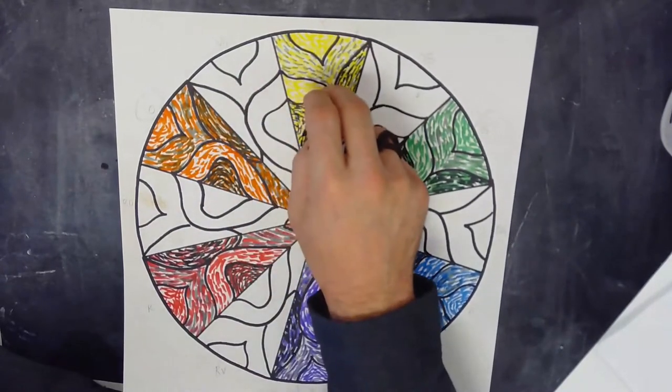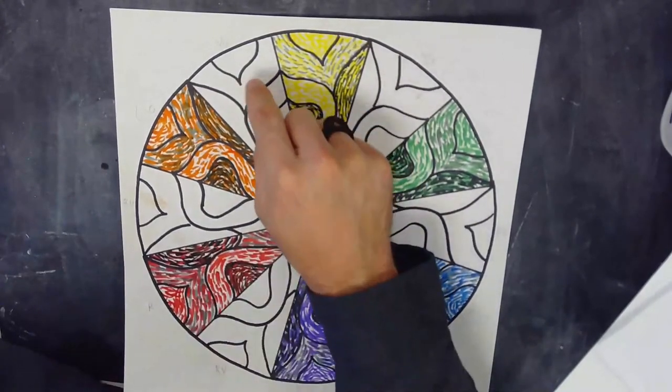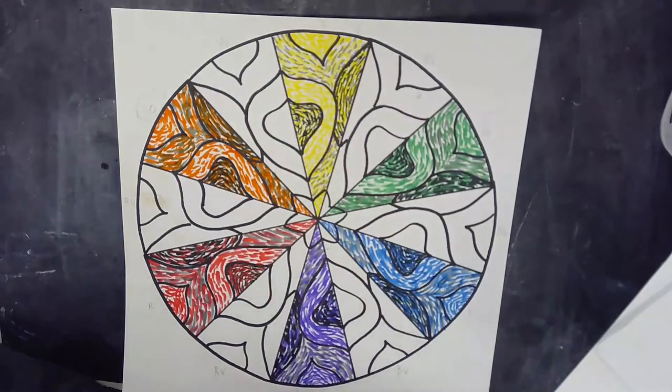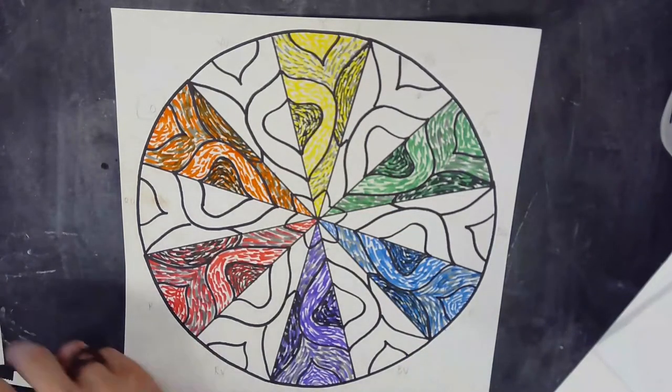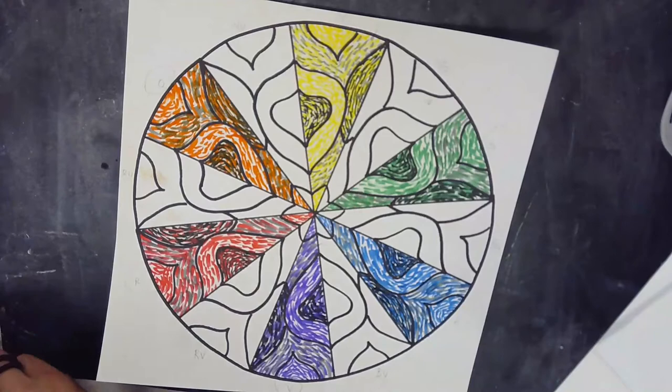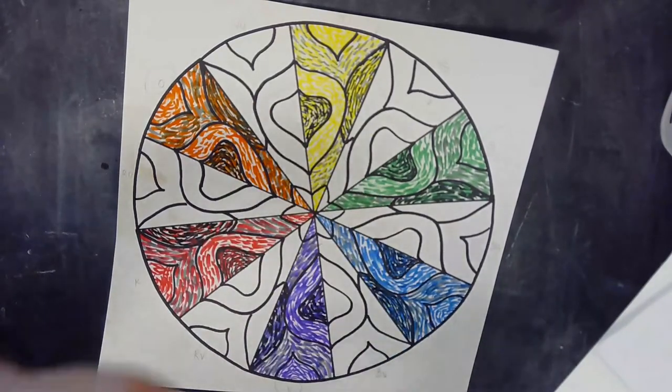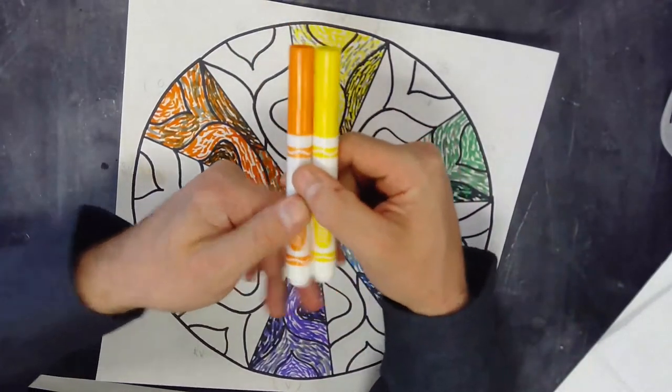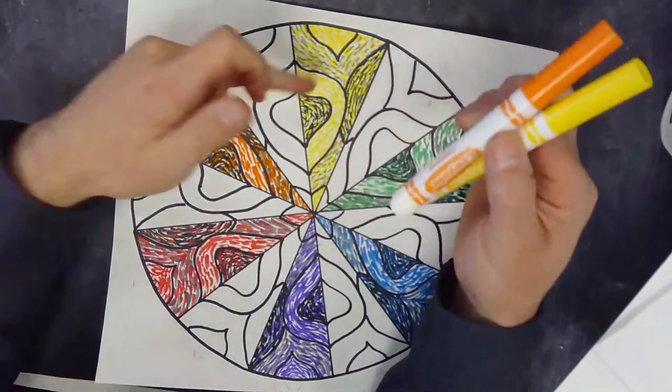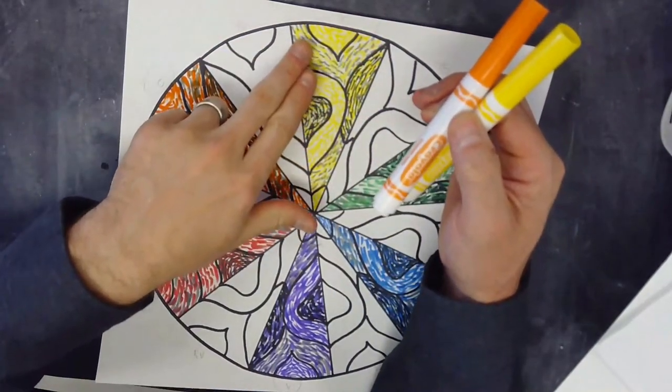I'm going to start here with yellow-orange and what we need to realize is that we don't have a color of marker that is yellow-orange, so we're going to do some visual mixing, just like we've been doing with the tones and the shades.